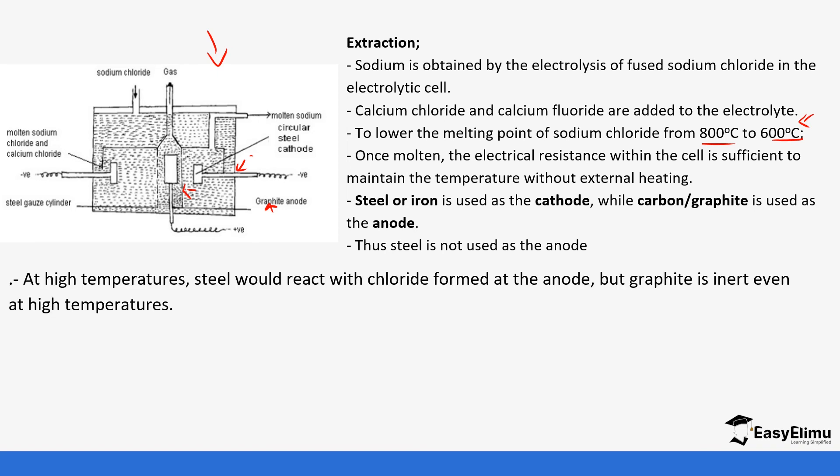We do not use steel as the anode because at high temperatures steel would react with chlorine. Remember the chloride ions go to the anode. We're going to be discharging some gases and one of them is chlorine. At very high temperatures, chlorine usually reacts with steel. That is the reason why we do not use it as the anode but we use graphite instead.